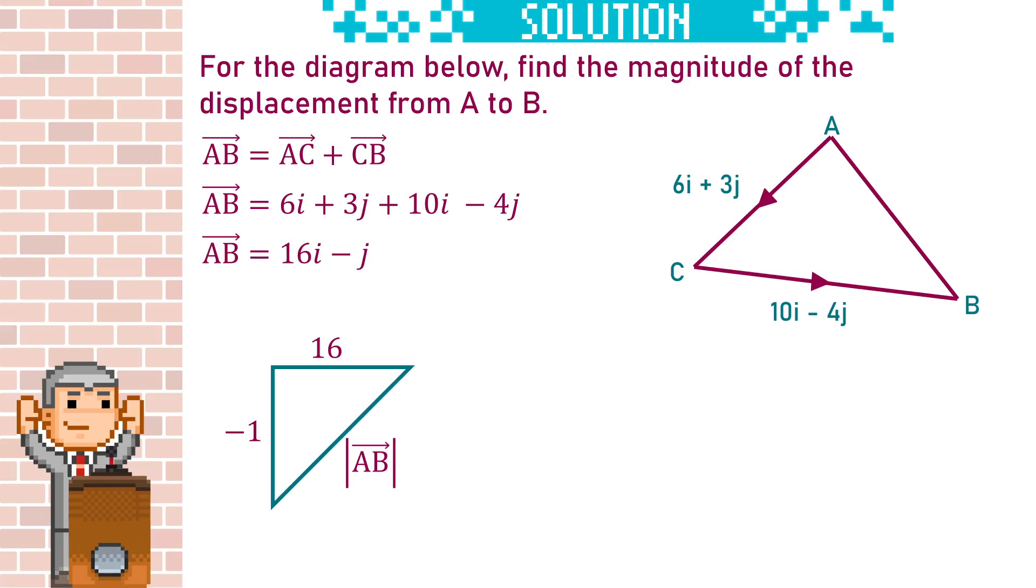We can then find the magnitude by using Pythagoras' theorem. We show magnitude with vertical lines either side of the A to B. So we're going to square root the 16 squared plus the minus 1 squared. This will give us 16.0 to three significant figures.